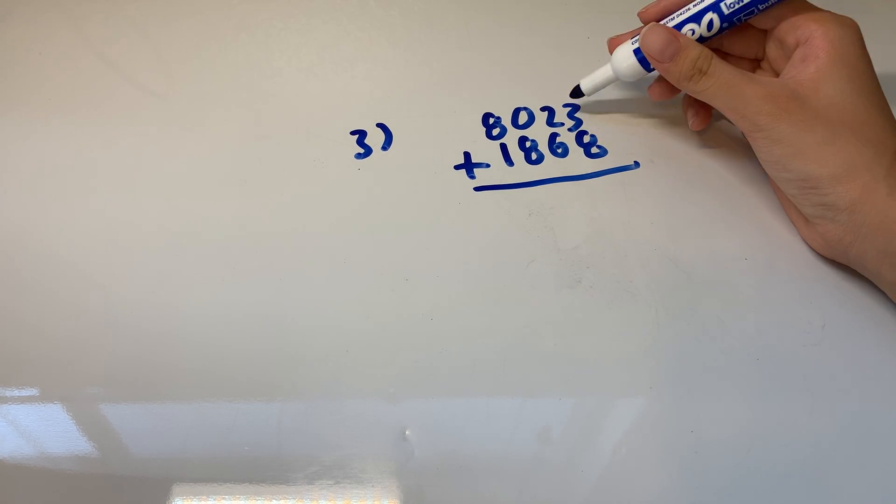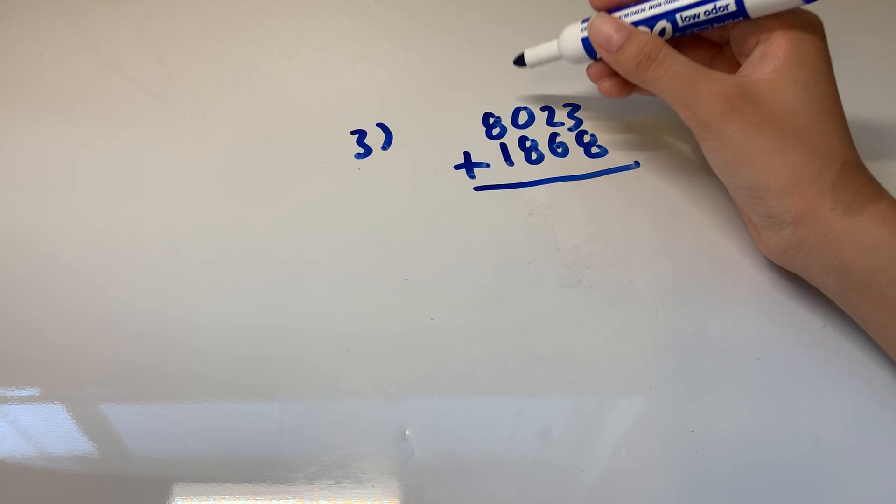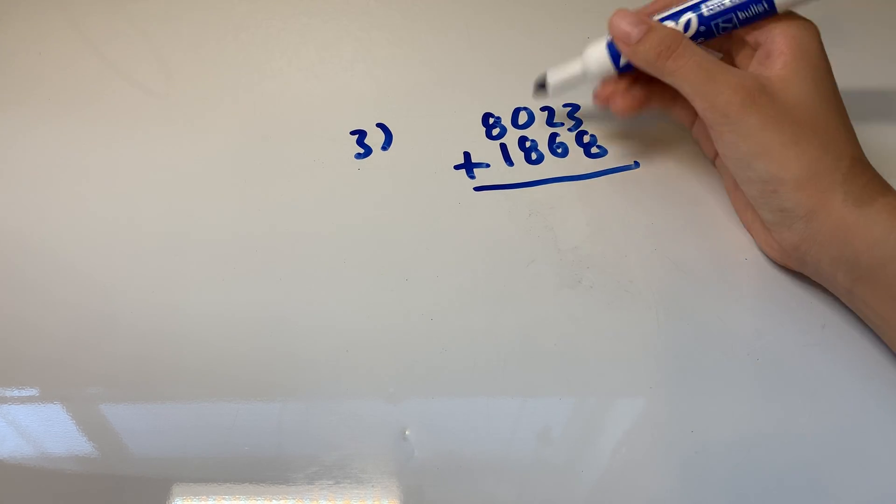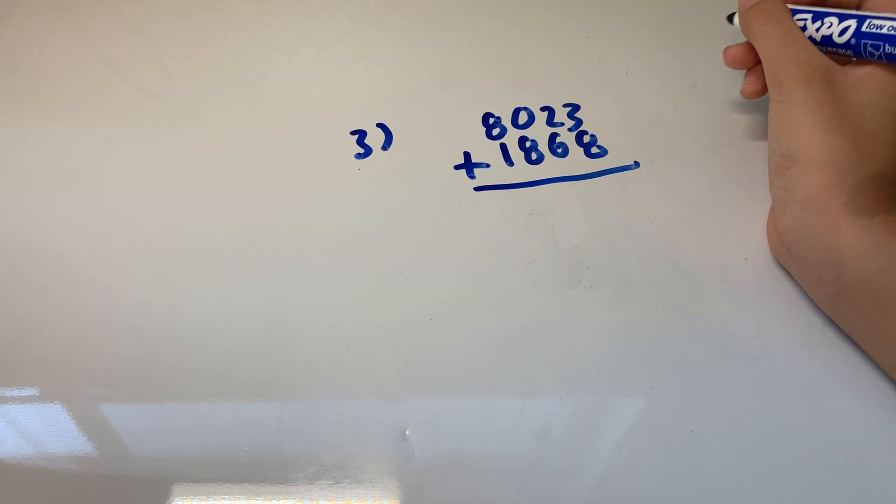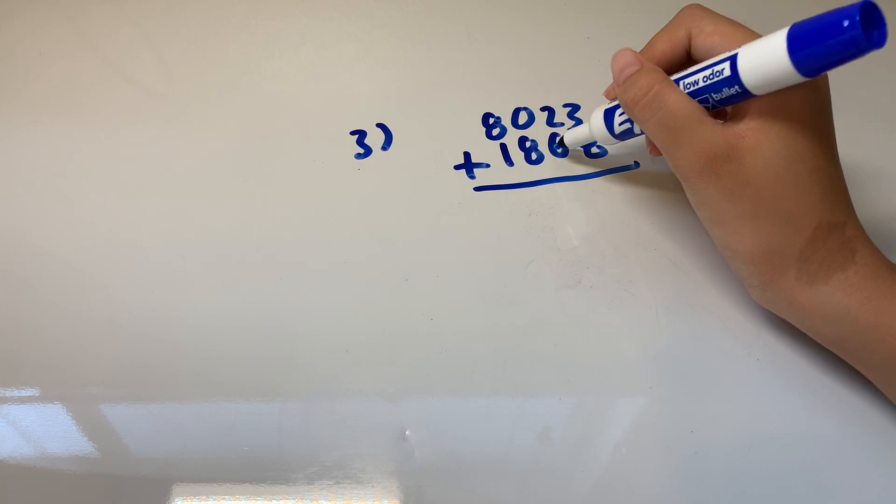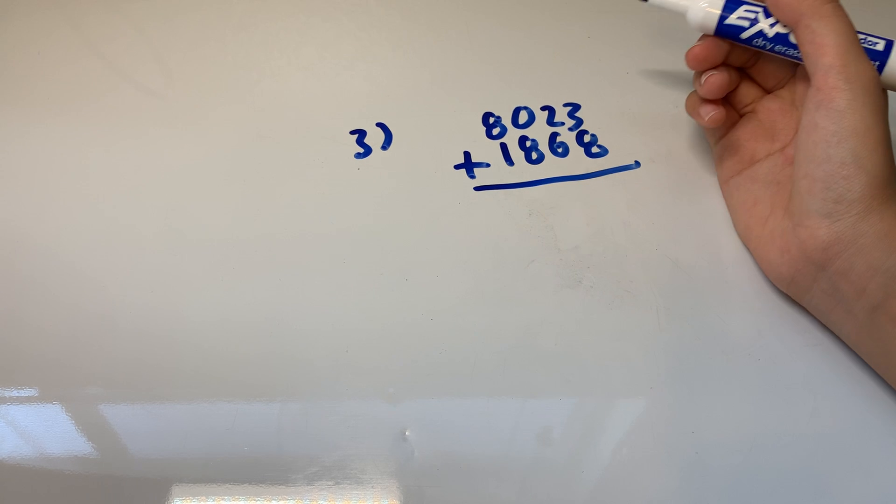This is the ones place, the tens place, the hundreds place, and the thousands place of each number. So we just want to make sure they're all aligned. This is the ones place, the tens place, hundreds place, and the thousands place. So we're good.